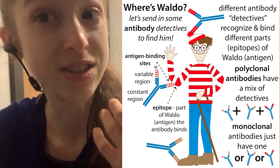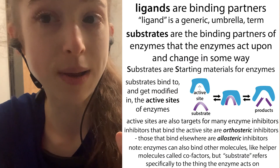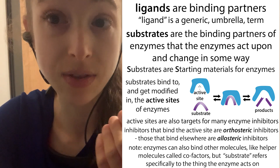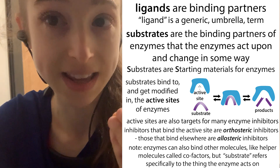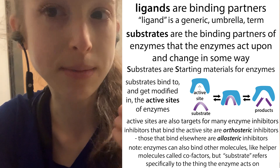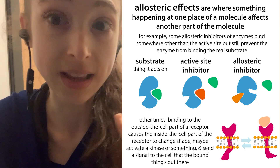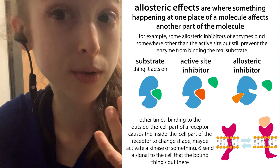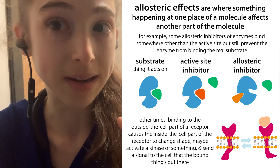When we talk about binding partners of antibodies, we call these antigens, and specifically we call the part of the antigen where the antibody is binding an epitope. For enzymes, the substrate binds in the active site where the action takes place. You can have other binding sites for other molecules, but where the activity happens is the active site. Inhibitors binding at the active site are called orthosteric inhibitors, and those binding elsewhere are called allosteric inhibitors.